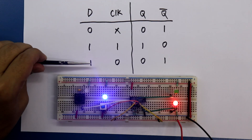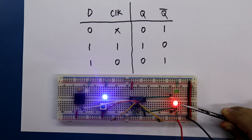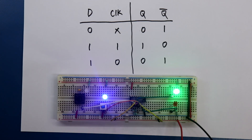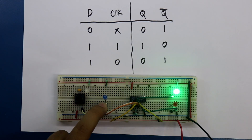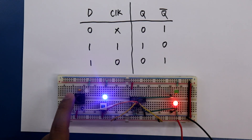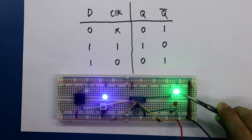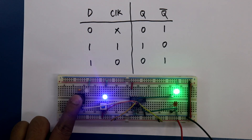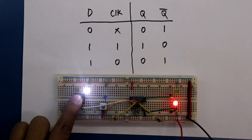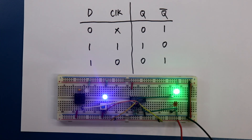Now D is 1. D is 1, clock is 0 — we are getting Q bar. Now applying the clock pulse — we will get Q. So whatever value D has, we will get that at the output after receiving the clock pulse. Now we get Q, and then Q bar again. This is how the D flip flop works.